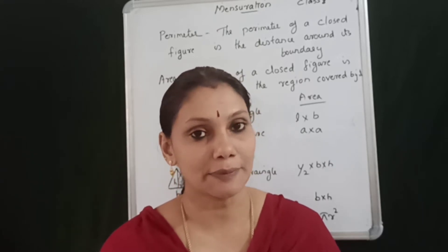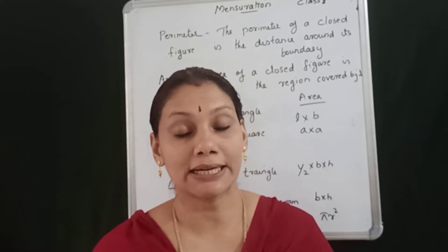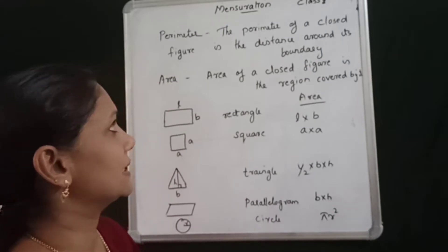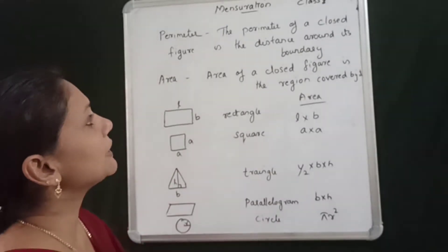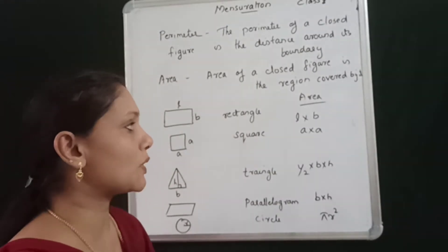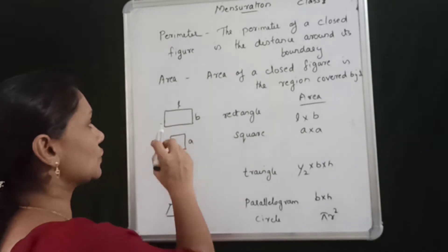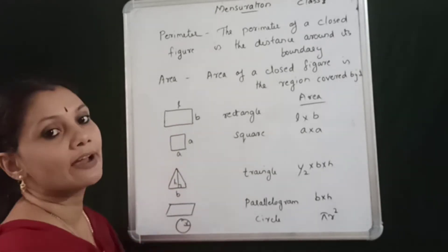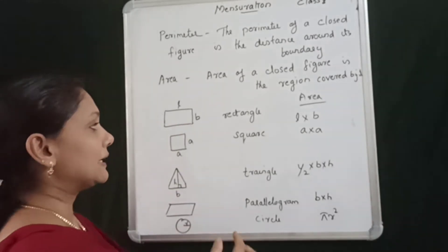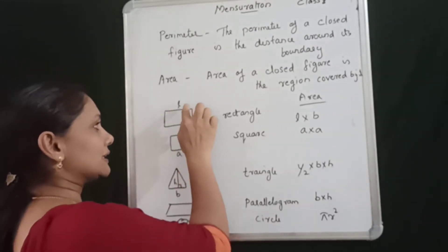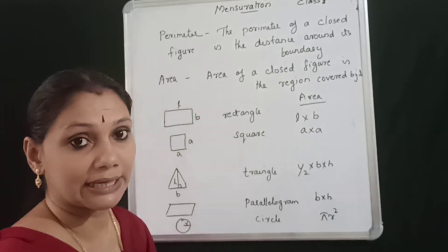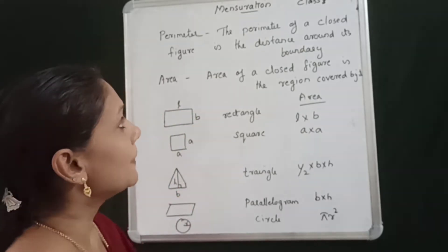What is perimeter? The perimeter of a closed figure is the distance around its boundary. This is a closed figure. This is a boundary — this is the distance. We have a perimeter.